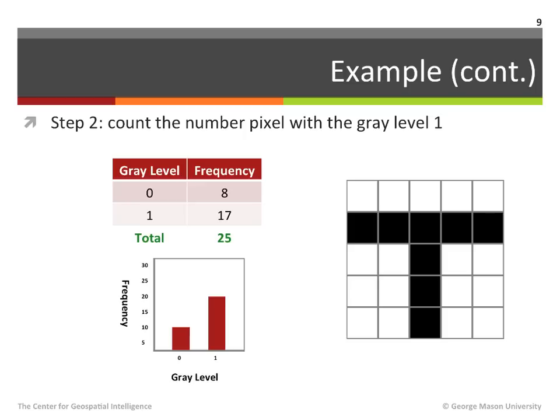It should be noted that if the dynamic range of the image was higher, for instance an image with 256 gray levels, the process would be continued until the frequency of all gray levels was computed. Although this is not a required step, it is advisable to verify our counts by summing all elements of the frequency column, which should add up to the total number of pixels in the image. The total of the frequency column in our table is 25, the same as the total number of pixels in our image, providing reassurance that no mistake was made during the histogram generation process.